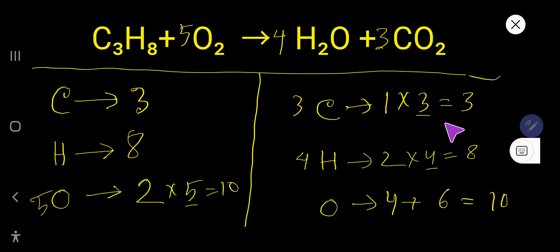Now look, everything here, carbon 3, 3, hydrogen 8, 8, and oxygen 10, 10. So everything is balanced. So you can say that this is the balanced chemical equation. This is the complete combustion of propane.